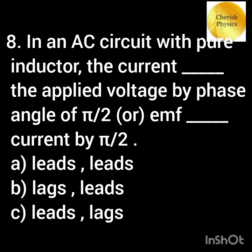In an AC circuit with a pure inductor, the current dash to the applied voltage by pi by 2, or the EMF dash to the current by pi by 2.